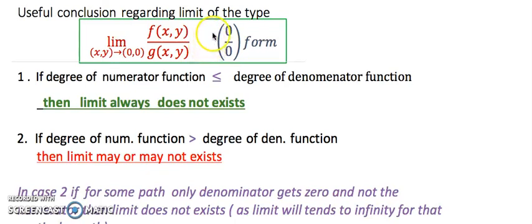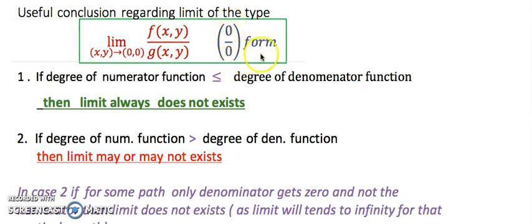Hello everyone. I am going to share with you some conclusions regarding limits of this kind, where you see a rational expression and the point of limit discussion is (0,0). You will observe that when you put in the value you get a 0/0 form and the function is not defined at that point. In this case, what will be the limit of such expressions?